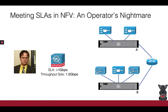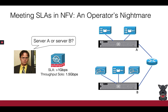Our protagonist for today is Dwight, who is now an NFV operator at his local ISP. Dwight's goal is to deploy a software firewall in the ISP's NFV cluster such that its throughput SLA of 1 Gbps is met. Dwight can either co-locate the firewall on server A with two already running NFs, or on server B with three other NFs.